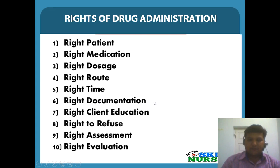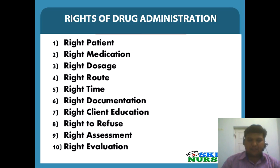Right documentation is very important for nurses as it is a legal document, so we have to record the procedure. Right client education: explain the procedure to the client and explain the effects and side effects of the drug. Right to refuse: the patient has the right to choose or refuse treatment. The last two rights are right assessment and right evaluation. Right assessment: assess the condition of the patient before giving medication. Right evaluation: after giving medication, evaluate the therapeutic effect of the drug. These are the 10 rights of drug administration.